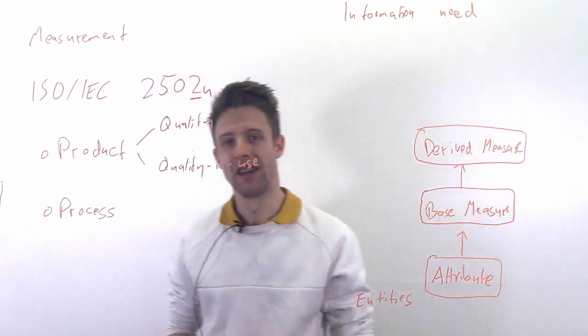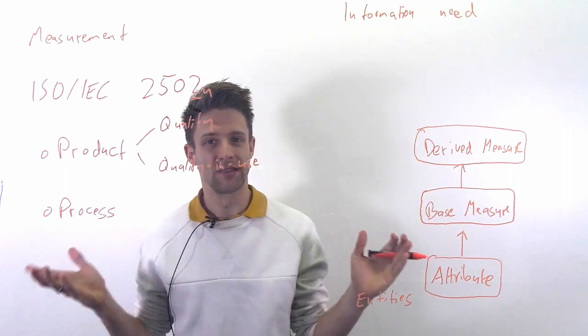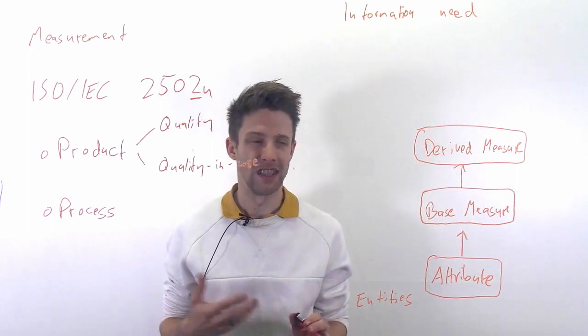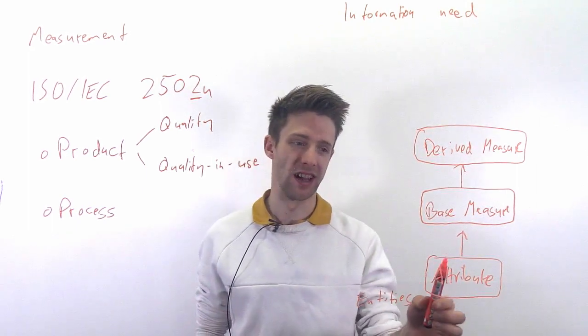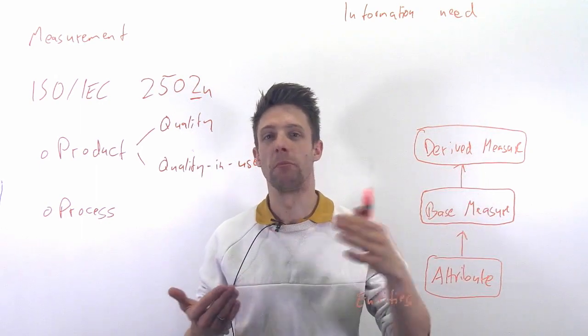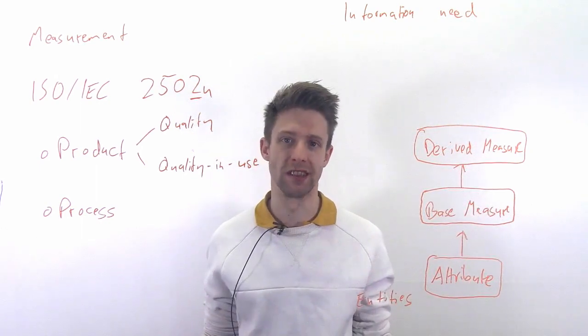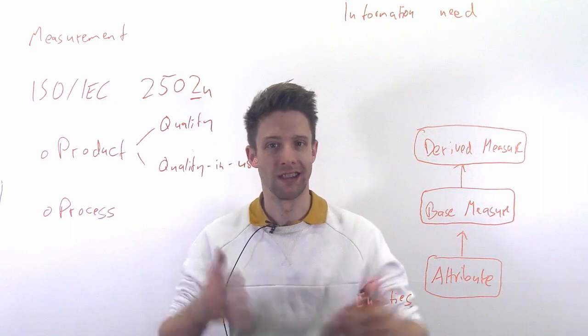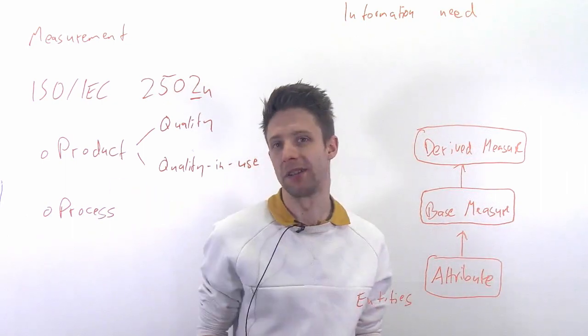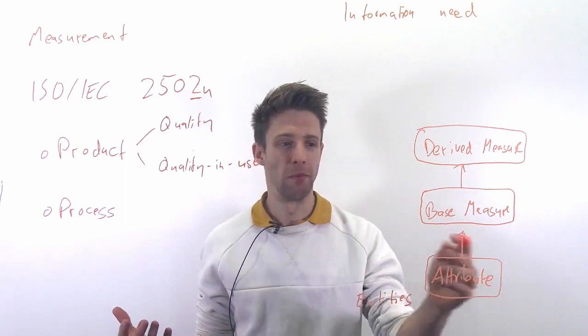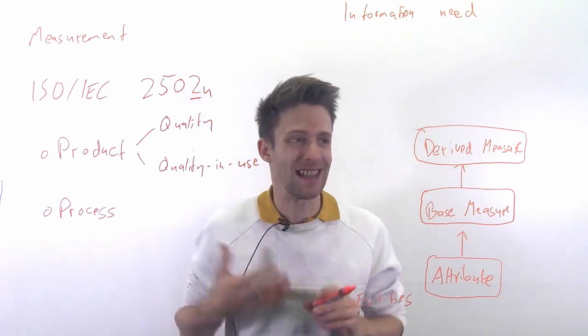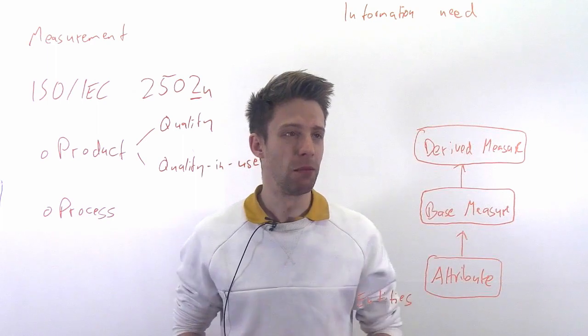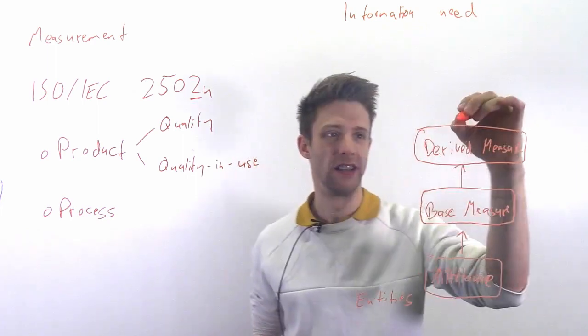You could also measure other things - number of classes, why not, number of functions. So this is not at all trivial if you go from a basic example such as size. Now the issue is with base measures we usually can't say a lot. So size itself doesn't really matter for us. So usually you need to get to a higher level and you have so-called derived measures, and that's a function of one or more base measures. For example, one way of telling how good our product is, is to look at bugs. But the number of bugs is maybe not very interesting.